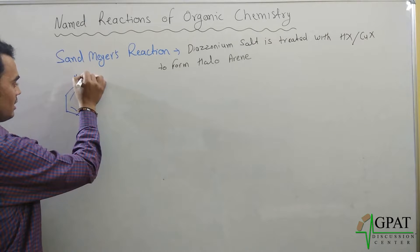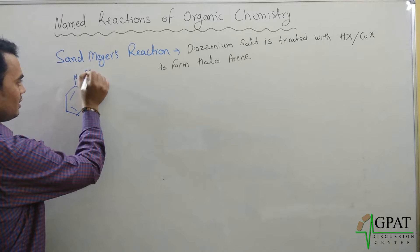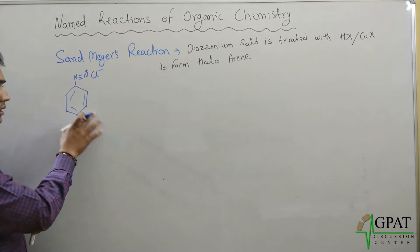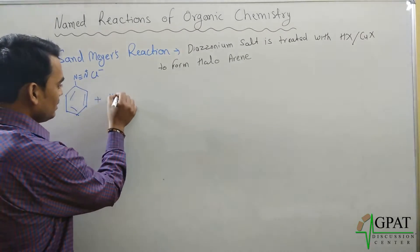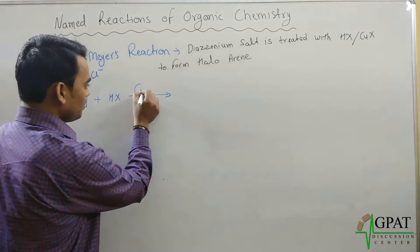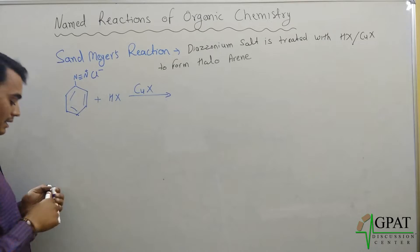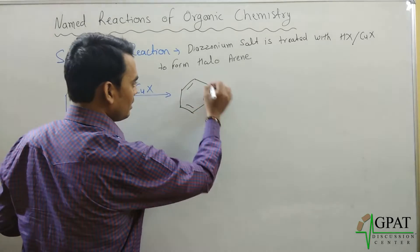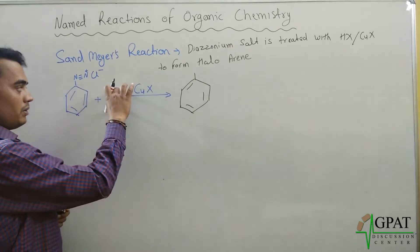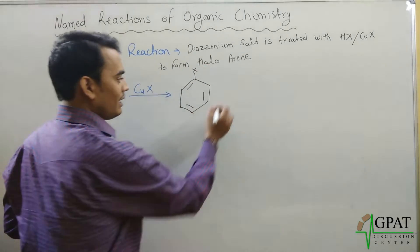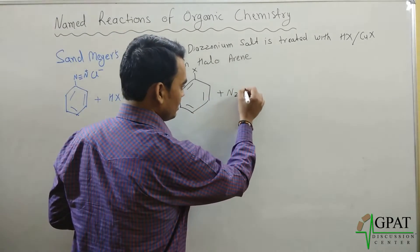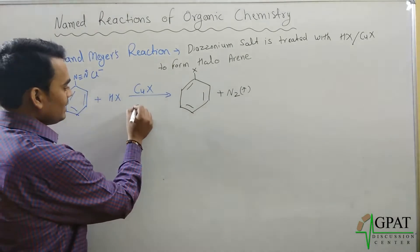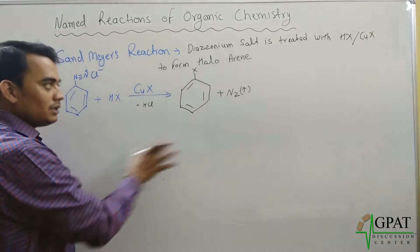When the diazonium salt is treated with hydrogen halide in the presence of copper halide, a haloarene will form. This means a halogen group will be added to the benzene ring to form the haloarene, and nitrogen gas will be evolved and escape out, as well as hydrogen chloride will be eliminated.